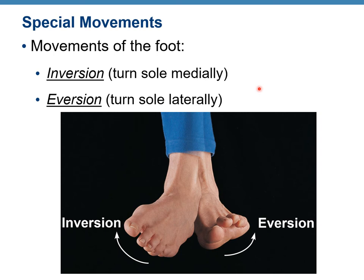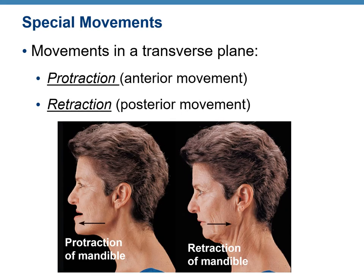Special movements of the foot also include inversion, which is turning the sole medially, and eversion, which is turning the sole laterally. Protraction and retraction are also special movements — for example, protraction of the mandible pushes it anteriorly to the front, while retraction brings it back. You can also do this with your tongue: sticking your tongue out is protraction, pulling it back into the oral cavity is retraction.